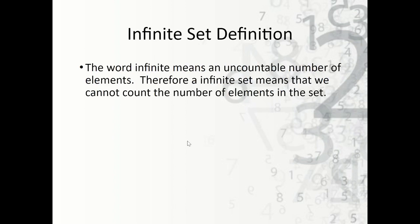Now let's talk about the definition of infinite set closure. First, what does infinite mean? Infinite means an uncountable number of elements — it goes on to infinity, keeping going forever. An example would be the natural numbers: we can count 1, 2, 3, 4... and no matter what number we stop at, there's always a number past it. So that's an infinite number of elements, meaning we cannot count the total number of elements in the set.